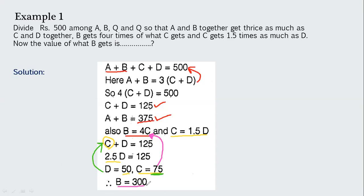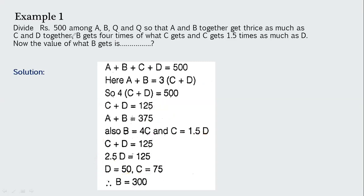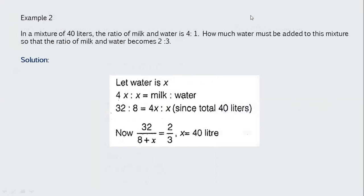Initially ₹500 is distributed among four people, so A+B+C+D = 500. A+B = 3(C+D), B = 4C, C = 1.5D — four unknowns, four equations. Once you practice, you can do the calculation quickly.